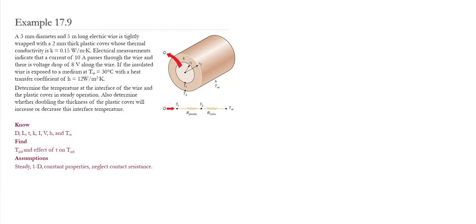Electrical measurements indicate that the current is 10 amps which passes through the wire and the voltage drop is 8 volts along the wire. If the insulated wire is exposed to a medium at 30 Celsius with a heat transfer coefficient of 12 watts per meter squared Kelvin, we need to determine the temperature of the interface of the wire and the plastic cover in steady operation. And we also need to determine whether doubling the thickness of the plastic will increase or decrease this interface temperature.